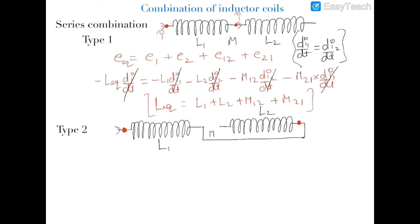In the second case, the current entering this coil is from one side but the current entering the other coil is from the opposite side. This makes a difference: the magnetic field of the first coil and the magnetic field of the second coil will be in different directions.